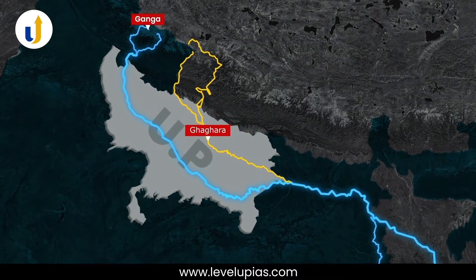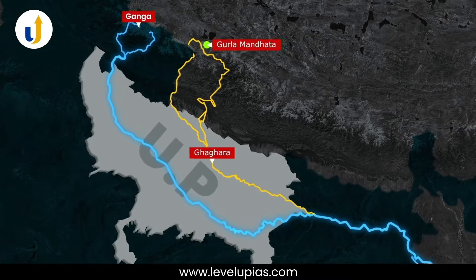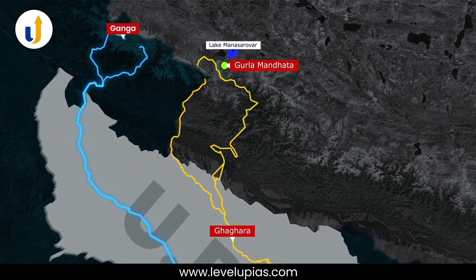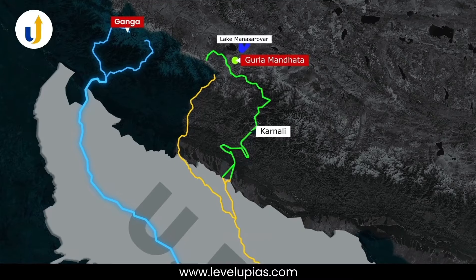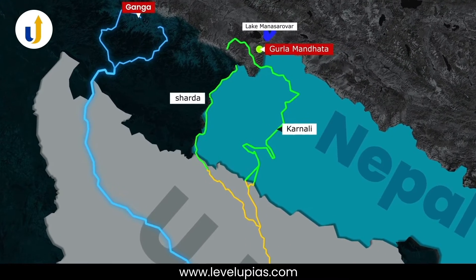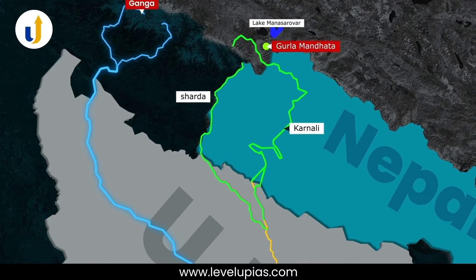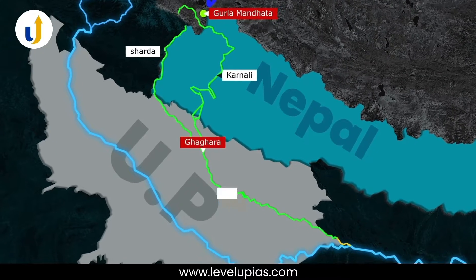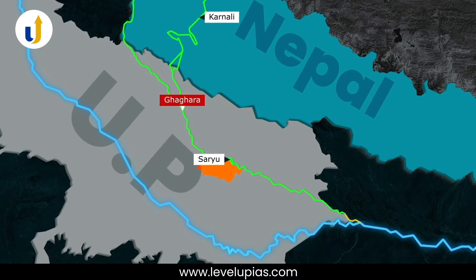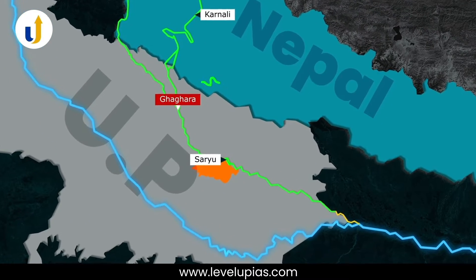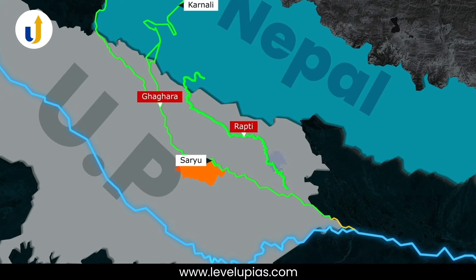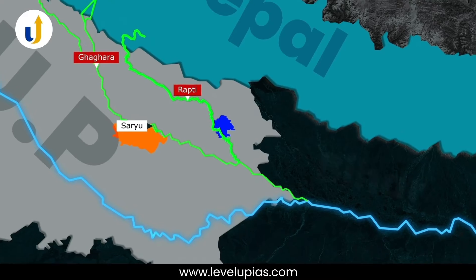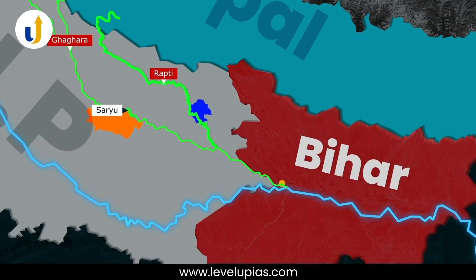The Ghagra River has its source near Gurla Mandhata Peak, south of Mansarovar in Tibet. It is known as Karnali in Nepal, and after meeting the Sharda in India it is known as Ghagra. The lower Ghagra in Awadh is called Saryu. Its important tributary is the Rapti, and Gorakhpur is located on its bank. The Ghagra joins the Ganga at Chhapra in Bihar.